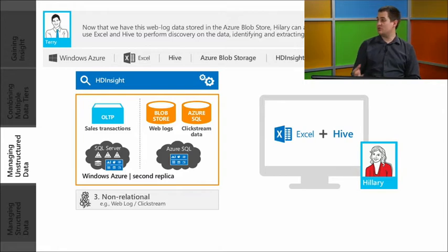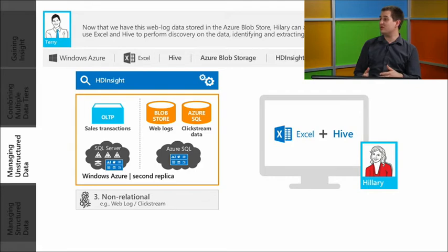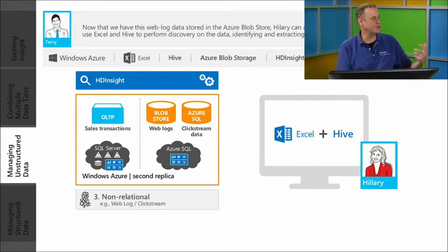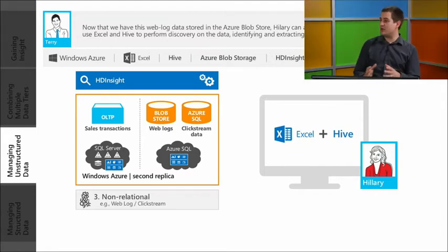Or we can query the Hive Table. A Hive Table is a standard Hadoop distributed file system — it has all the processed information in it after we've run it through the MapReduce process. So it's just a more structured version of the reduced data. It's been through the process: we've shrunk it down, cleaned it, and we're left with just what we're interested in.